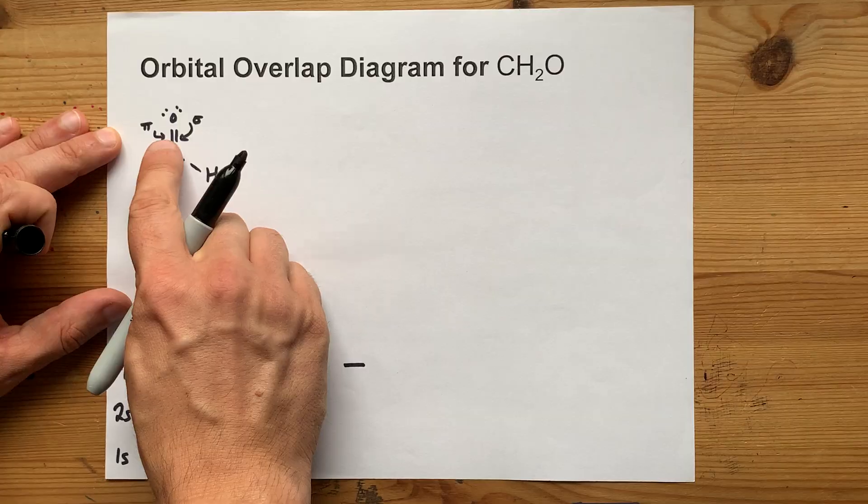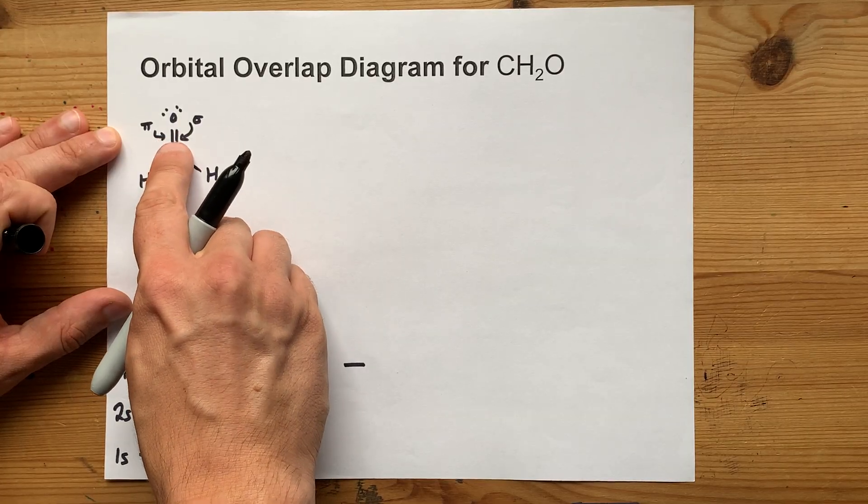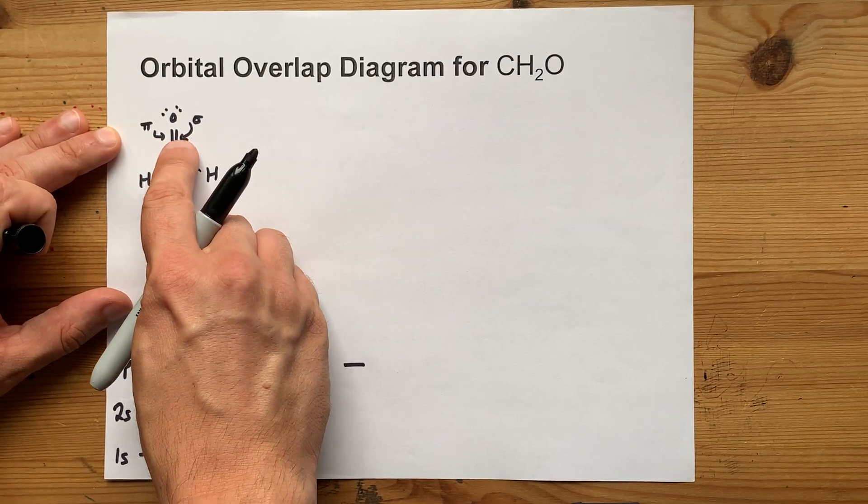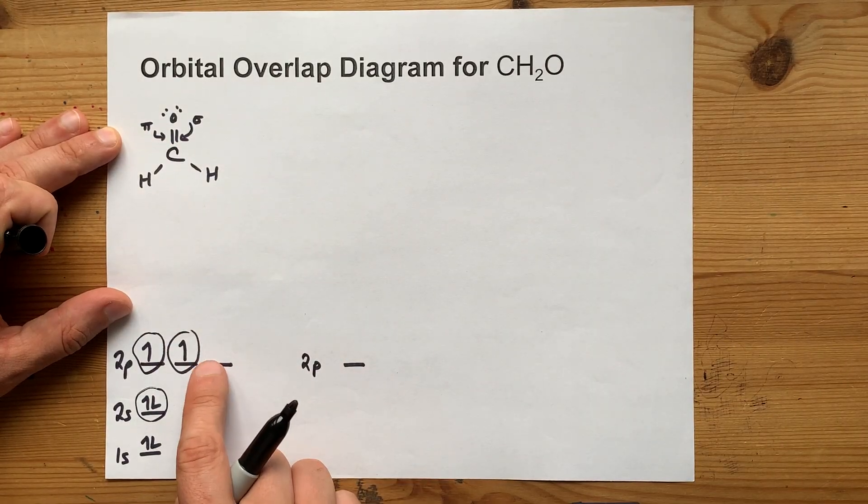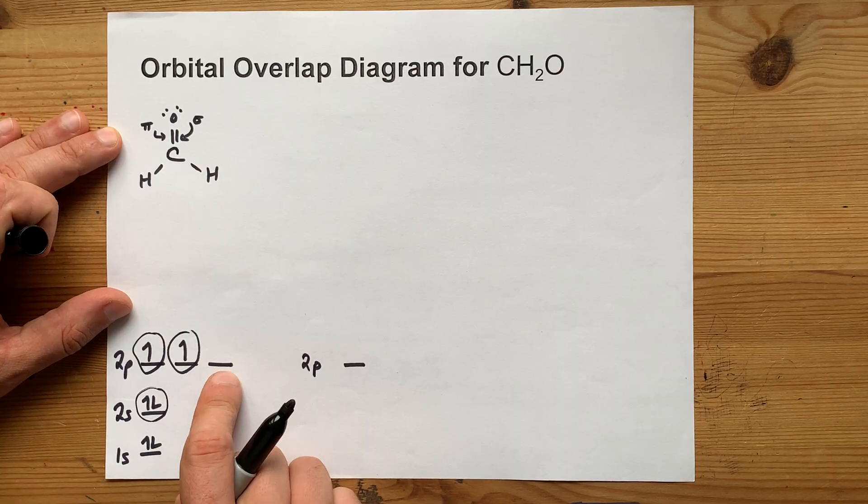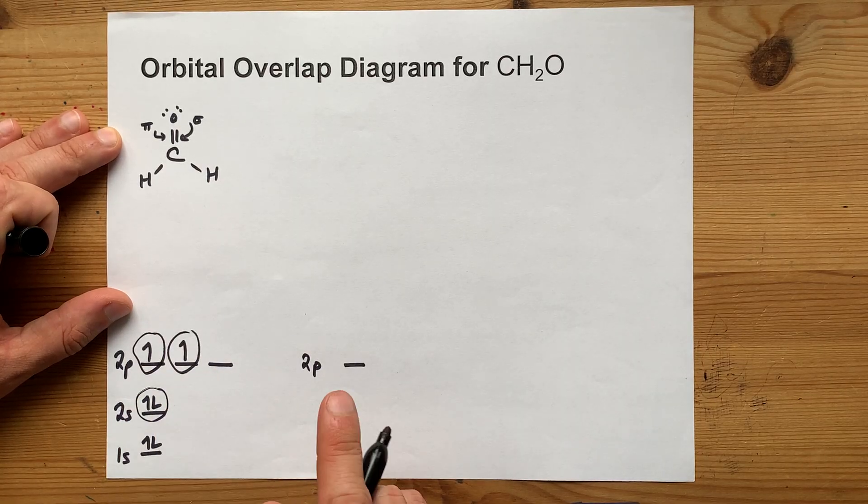If there had been a triple bond here, 1, 2, 3 bonds, the first one would have been sigma, and the next two both would have been pi. You would have left over two of the 2p orbitals, only hybridized these two together.